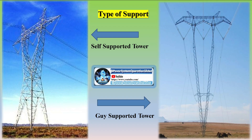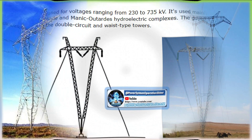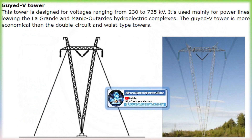Tensile forces in the conductors act on the two faces of the tower in the line direction. If the forces are balanced, no longitudinal forces will act on a tower suspending a straight line. For angle towers, longitudinal forces result in a resultant force acting in the angle bisector plane. For terminal towers, the forces can cause heavy longitudinal resultant forces. As tensile forces vary with external loads, even suspension towers on a straight line are affected by longitudinal forces.